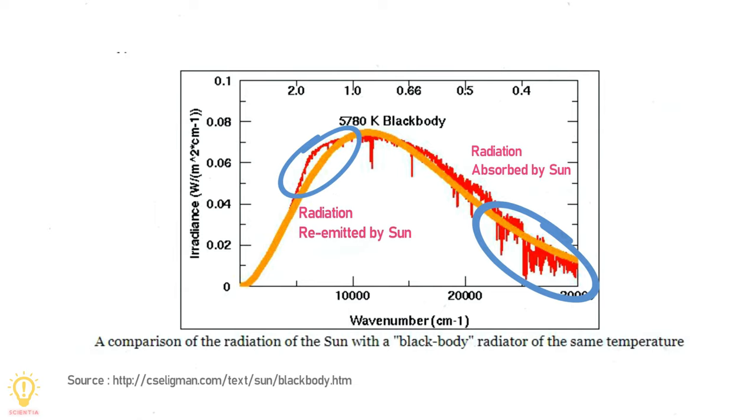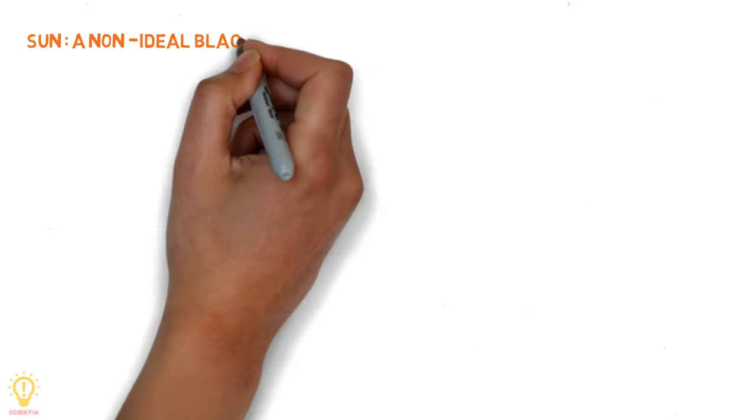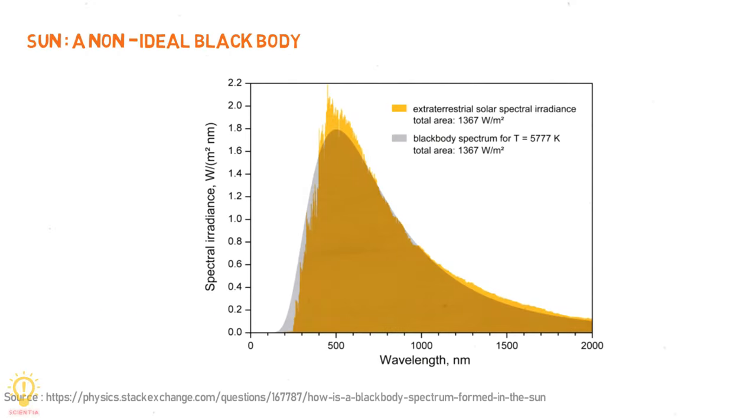But it is considered a non-ideal black body, emitting more radiation than expected in the far infrared, red, and visible regions, and less than expected in the ultraviolet region.